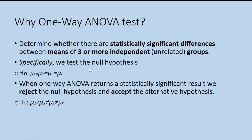Specifically, we want to test the null hypothesis that the means of each group are the same — they are not different. When our one-way ANOVA test returns a statistically significant result, we reject the null hypothesis. If the p-value is less than 0.05 we reject it, but when it is greater than 0.05 we accept the null hypothesis. When significant, we accept the alternative hypothesis, which says the individual means of each group are different.